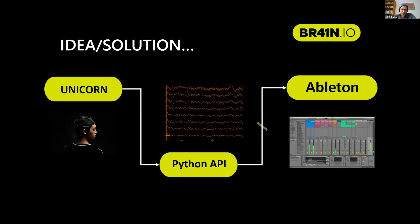We did it with a brain switch, as was previously mentioned. If you close your eyes, the beat and the speed would go down. And if you open your eyes, it would slowly ramp up again. So you could alter and affect the backing track or another part of the music by just using your brain.